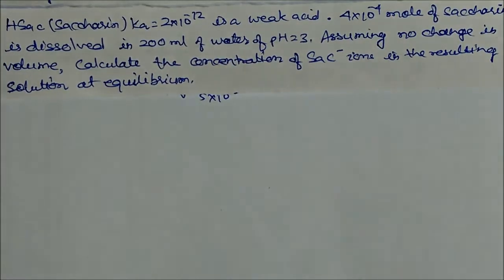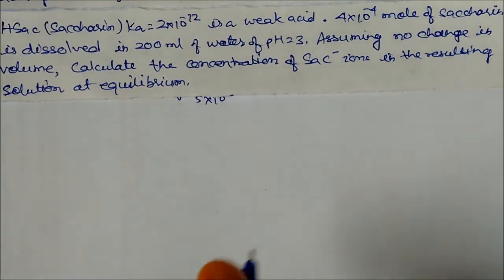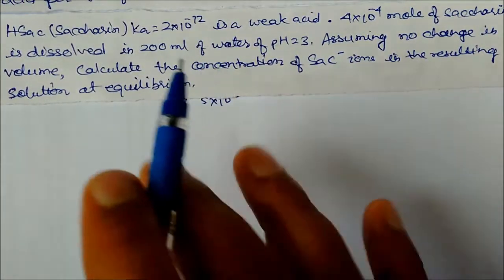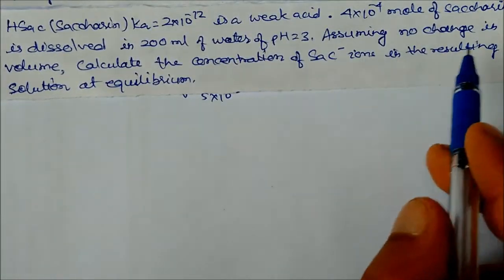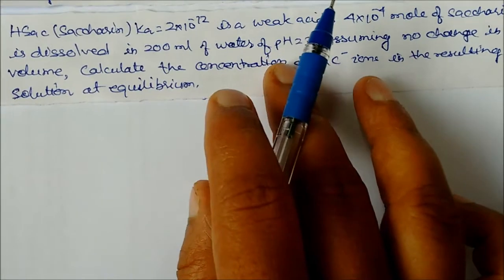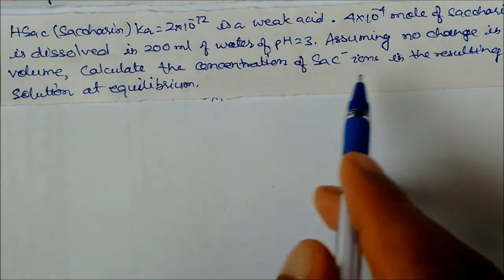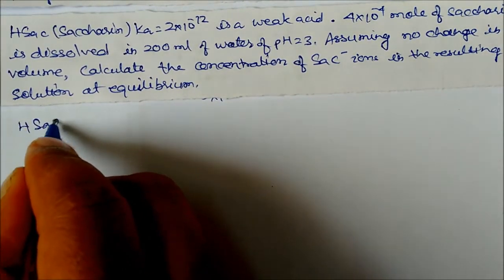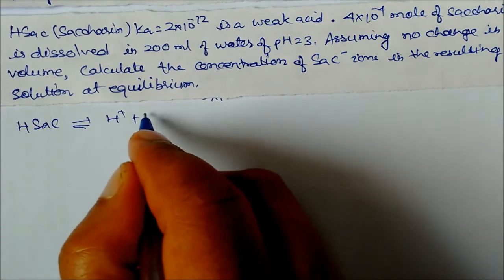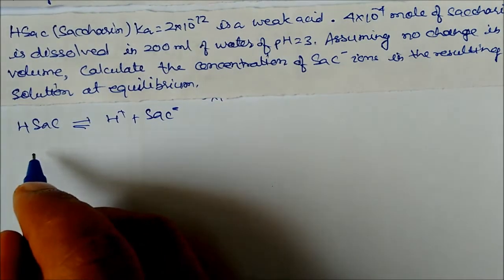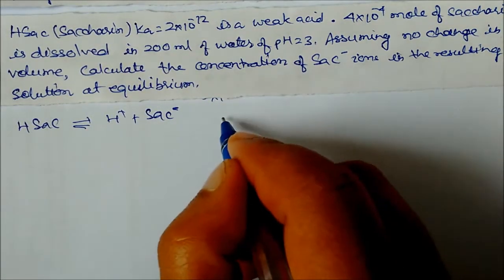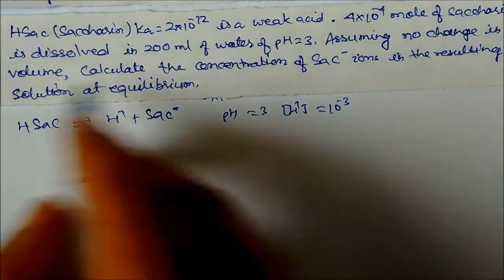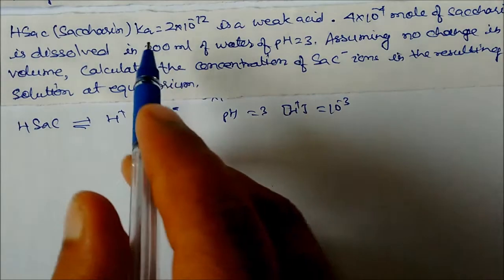Next problem involves saccharin (HSac) with Ka = 2×10⁻¹². A quantity 4×10⁻⁴ mol of saccharin is dissolved in 200 mL of water. The pH of the solution is 3. Assuming no change in volume, calculate the concentration of Sac⁻ ions in the resulting solution at equilibrium. The dissociation is: HSac → H⁺ + Sac⁻. Since pH = 3, concentration of H⁺ = 10⁻³ mol/L.